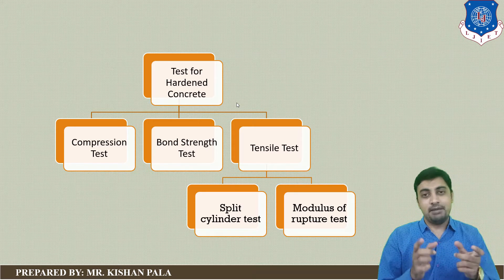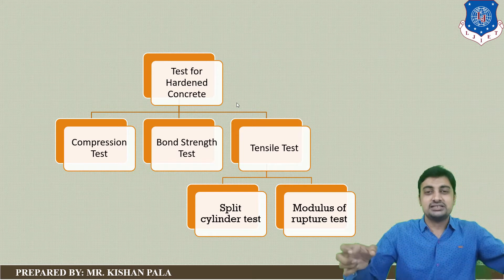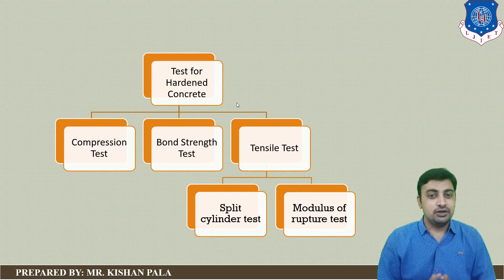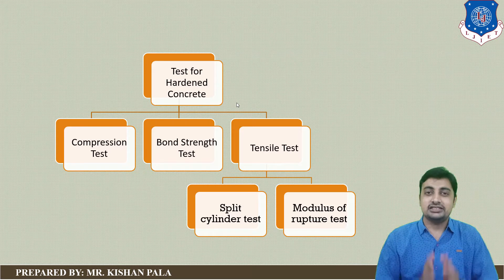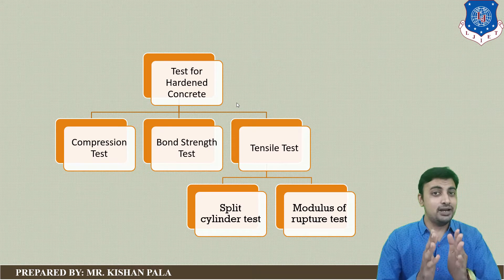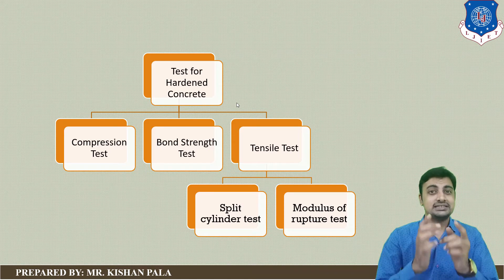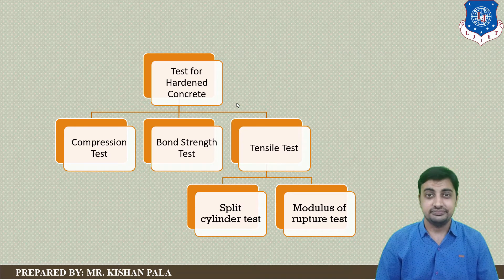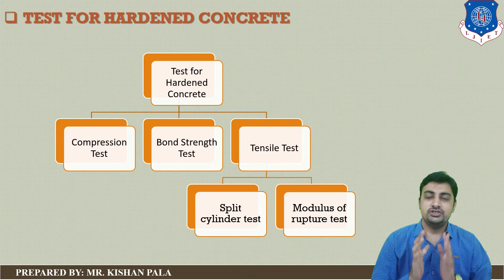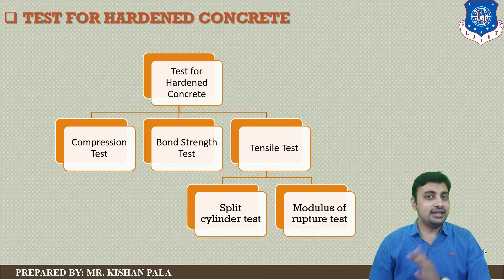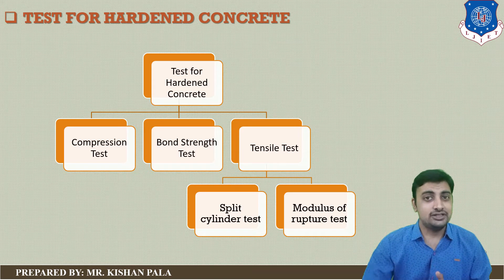Concrete is weak in tension, but you have to identify the flexural strength or tensile strength of the concrete mass using the modulus of rupture test and split cylinder test. You have to assure that your concrete is capable of giving the desired strength designed for the particular site and element. In short, you have to identify the compressive strength and tensile strength of the concrete mass. We will start from the compressive strength of the concrete mass.